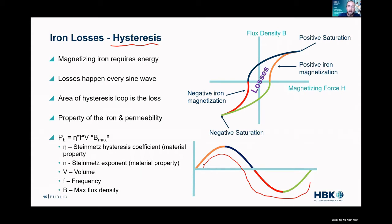As we increase current we're increasing the magnetization of our iron. As that sine wave wanes off and comes back down to zero, we're decreasing the magnetization of our iron, and this requires energy. Then the red is magnetizing negative, green is demagnetizing negative.